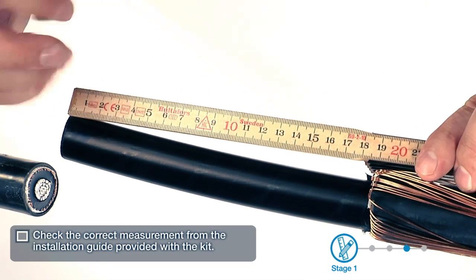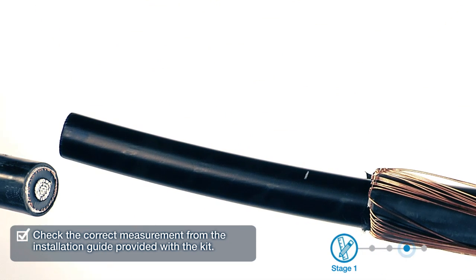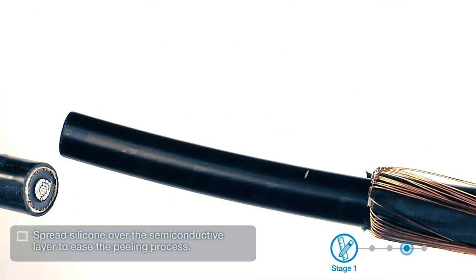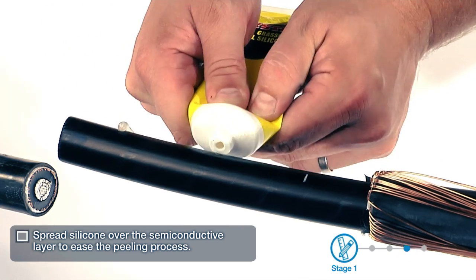Check the correct measurement from the installation guide provided with the kit. Spread silicone over the semi-conductive layer to ease the peeling process.